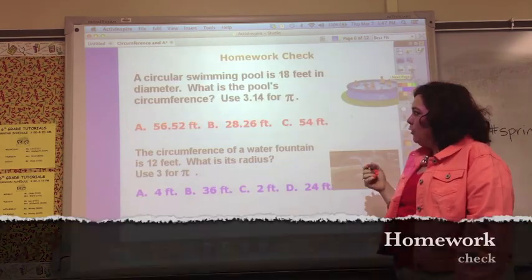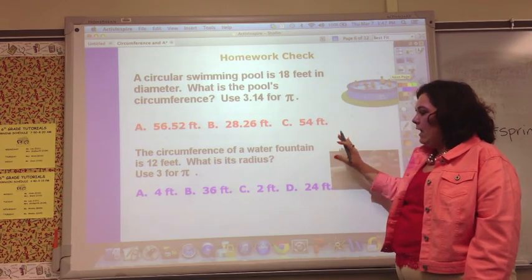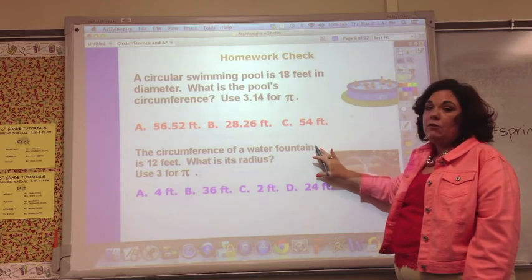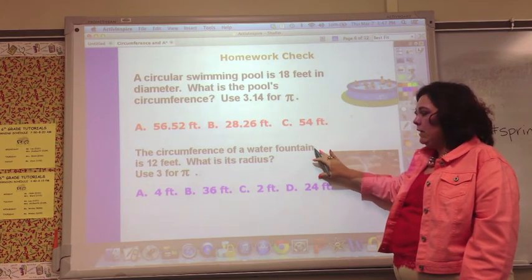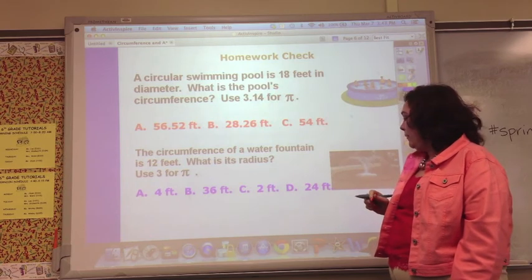Here's a word problem where you have to use 3.14 for pi and something that gives you the circumference and you need to find out the radius. Draw a picture, that should be able to help you out.